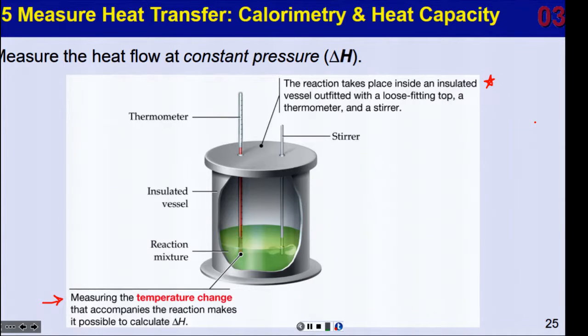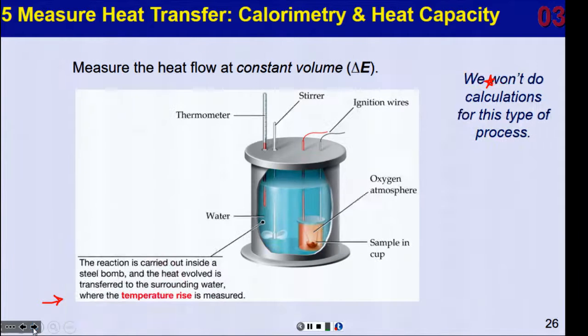The other way of doing this type of calorimetry is to do it with a constant volume. And so a constant volume would be measuring the heat flow at those changes, and we're going to look at temperature rises inside what's described as a steel bomb, kind of a funny name. And the heat evolved is going to be transferred to the water surrounding the system, and you measure the temperature rise there. This requires the constant volume and delta E type things. We're not going to work on these type of calculations, so just page on past it and keep on going.